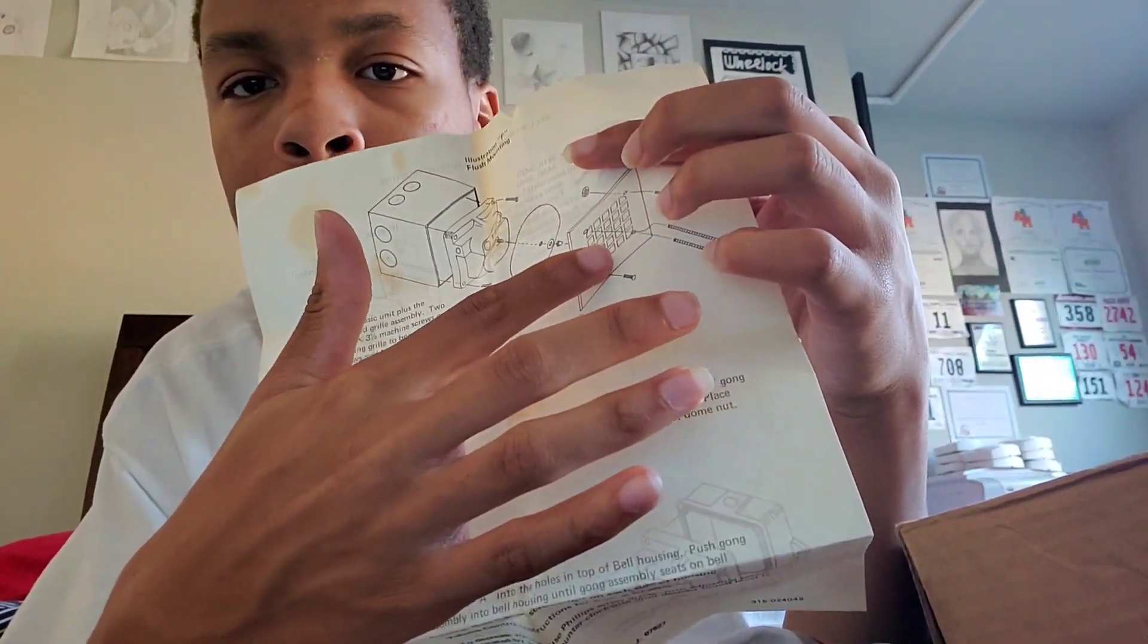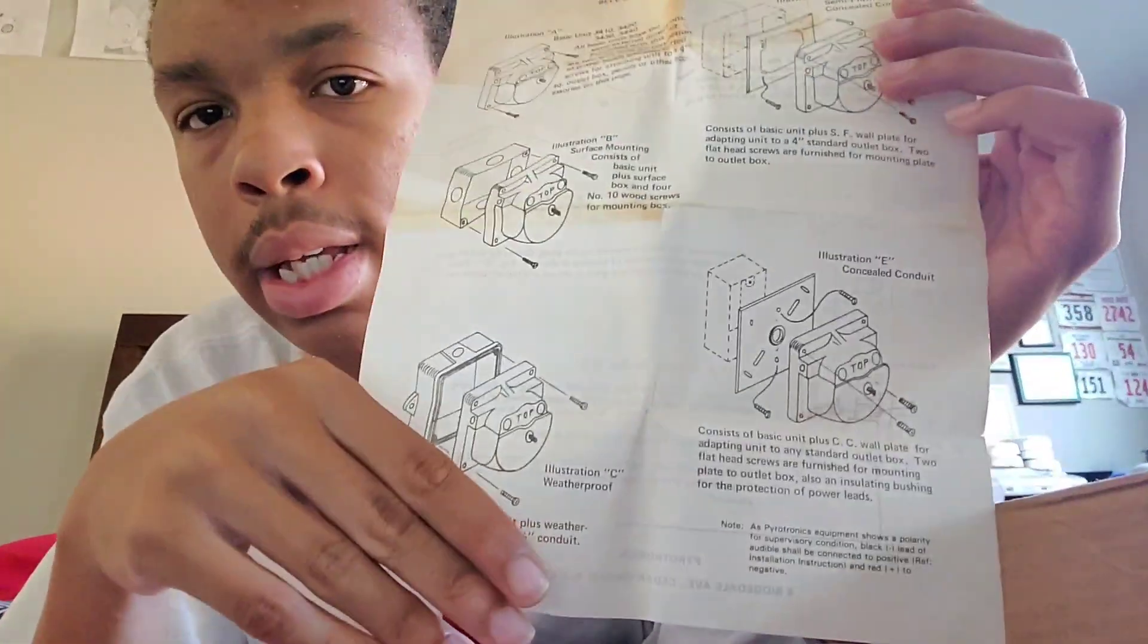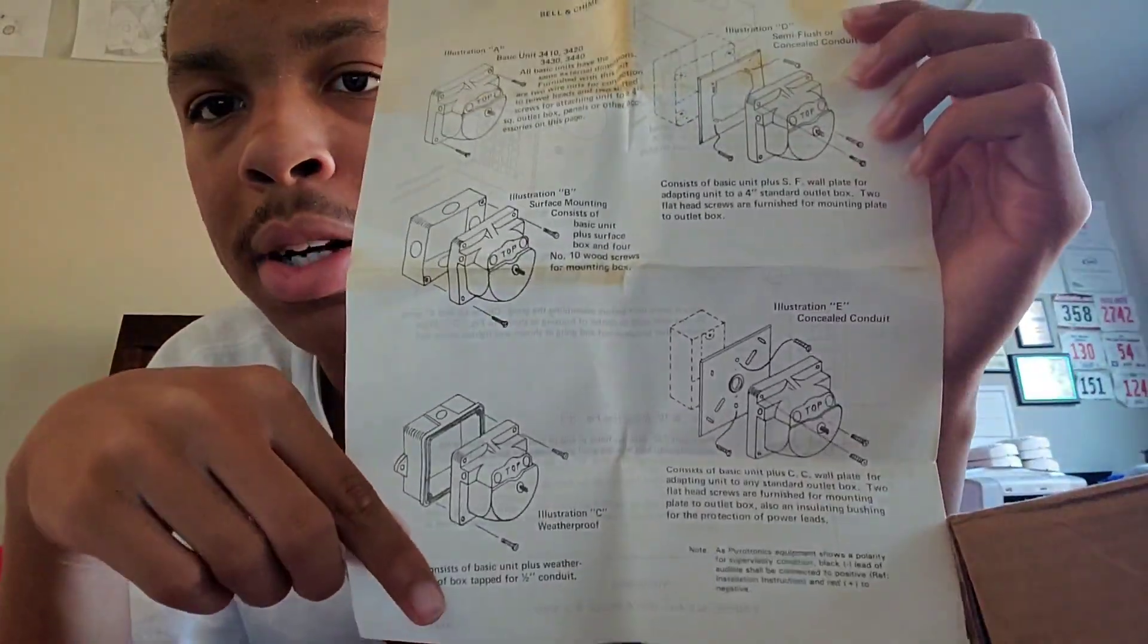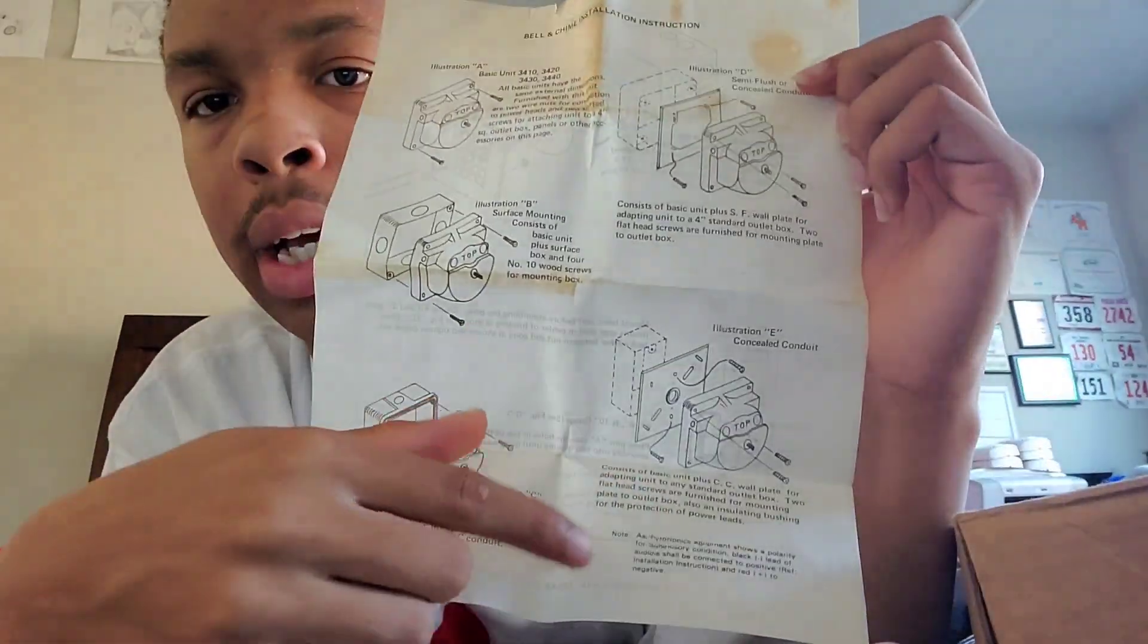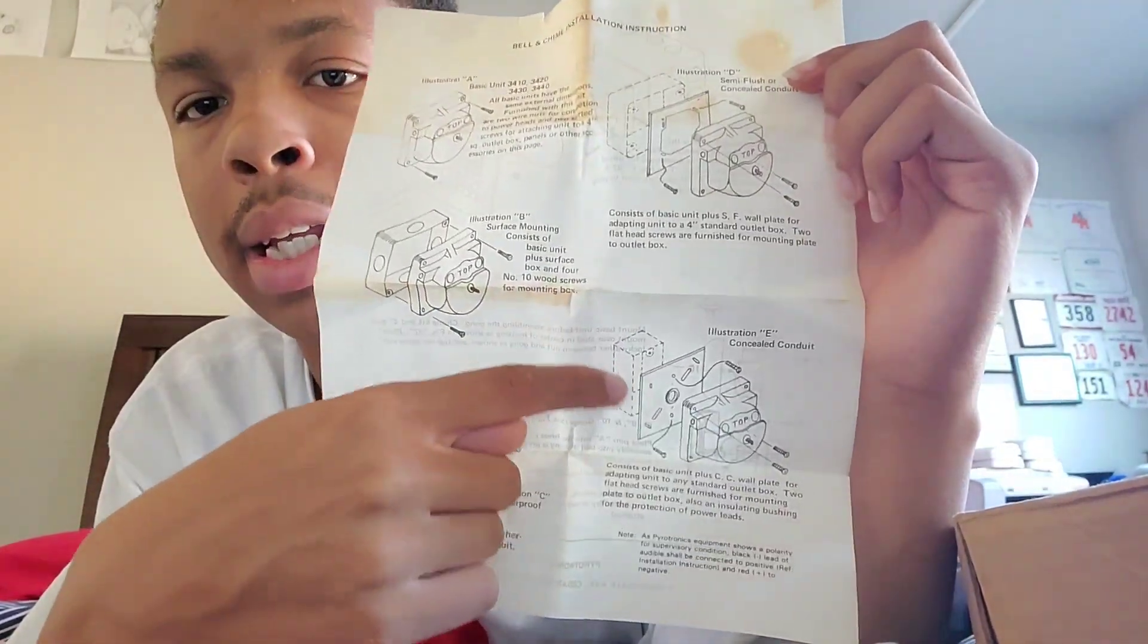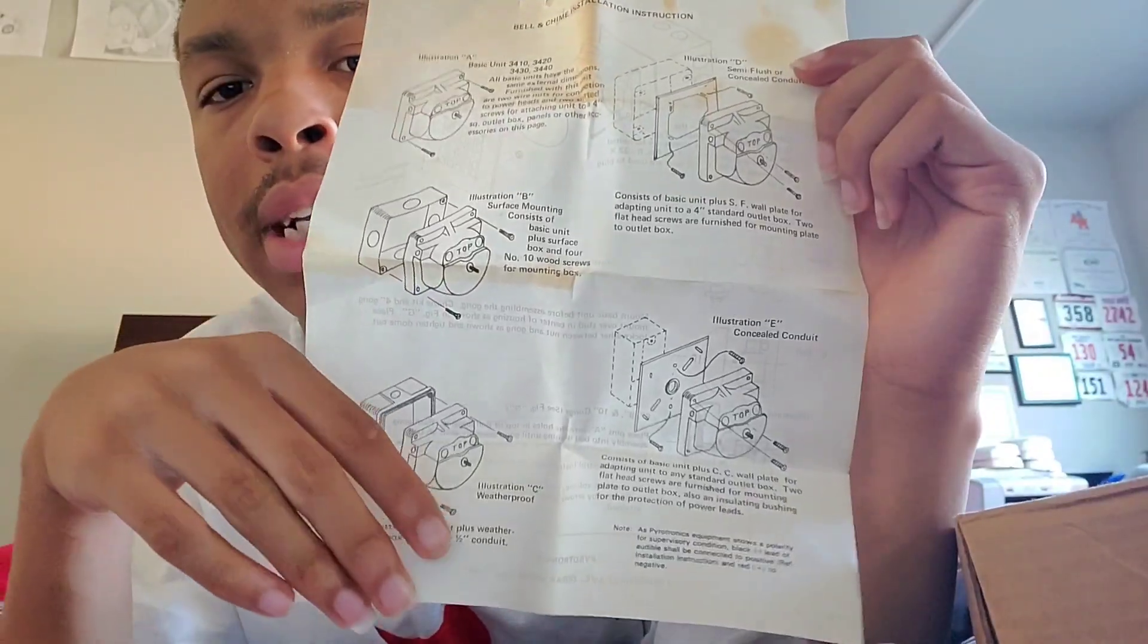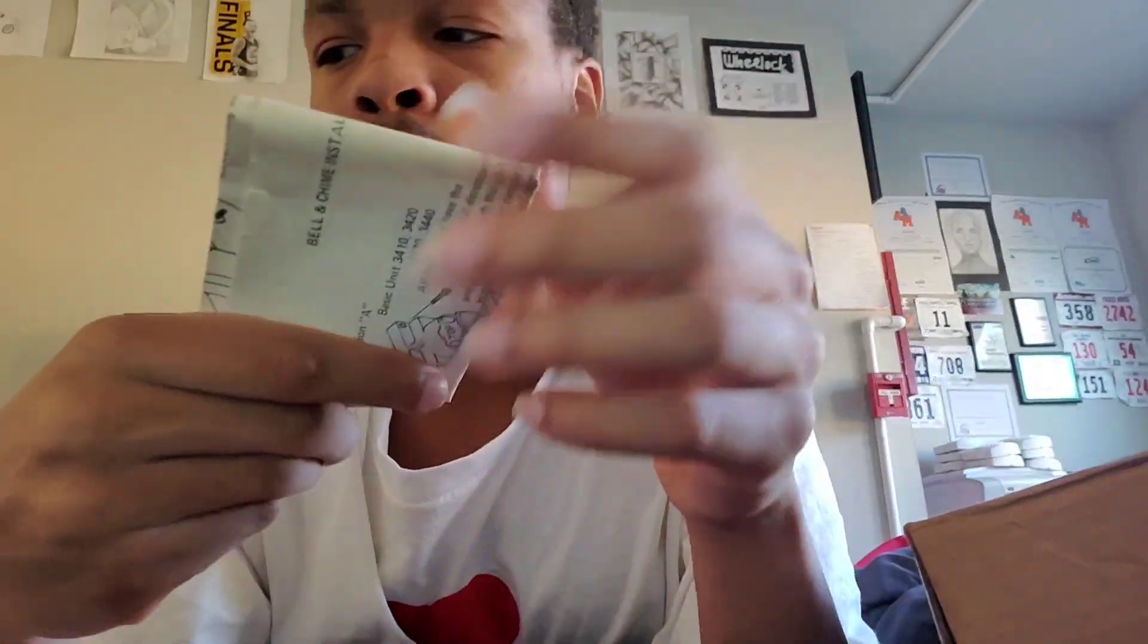This is what it looks like behind a guard and then things like that. You have weatherproof back boxes, standard 4x4 back boxes, the trim plate, single gang. Like I said, this mounts on single gang back box as well, so you have a lot of mounting options.